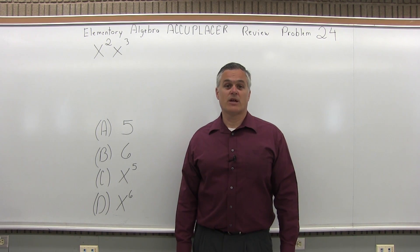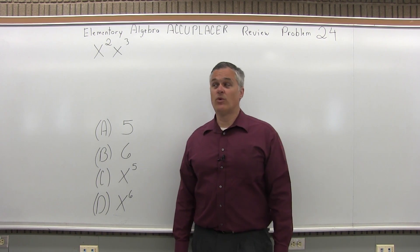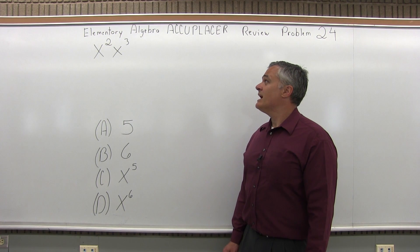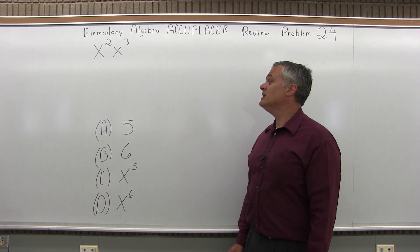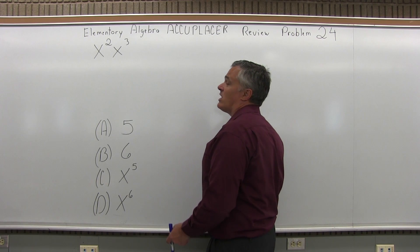This is the Elementary Algebra Accuplacer Review, Problem 24. It says x squared, x cubed equals, and then there's four options.